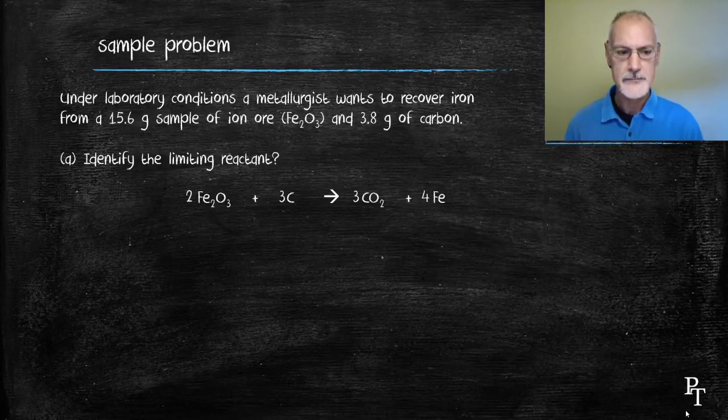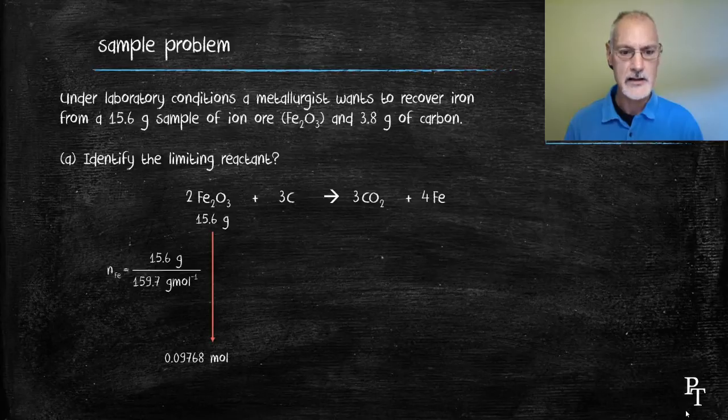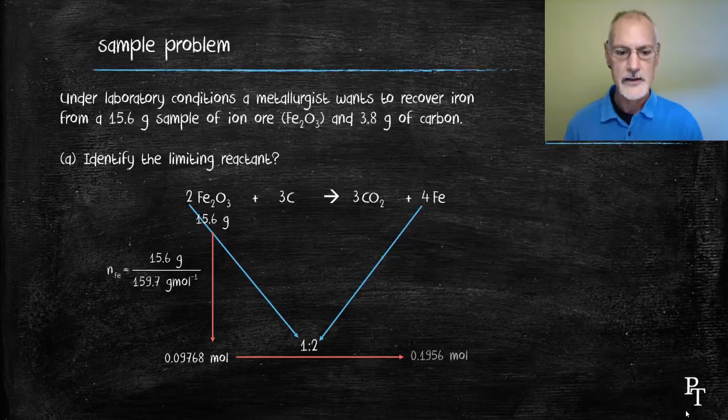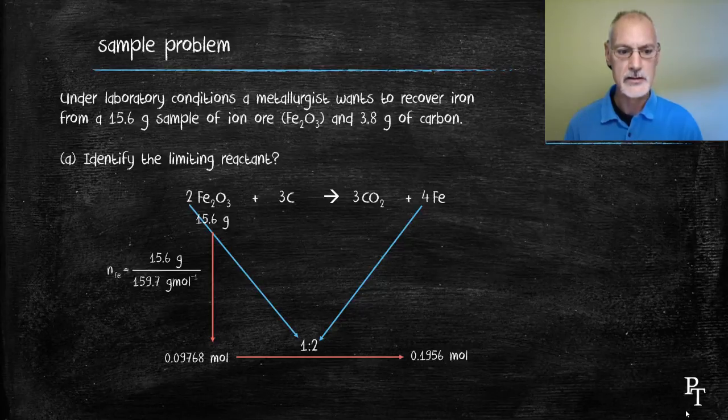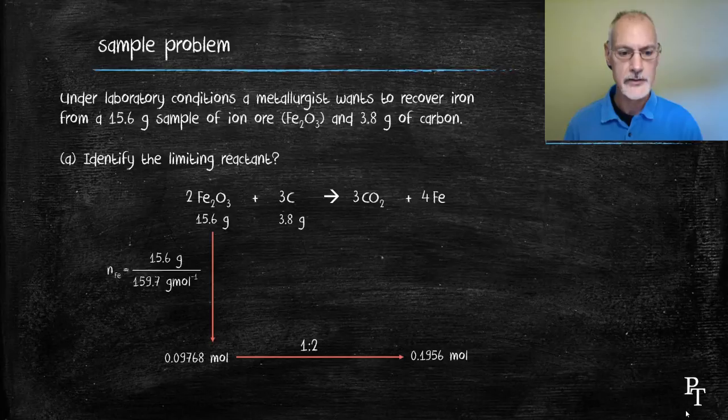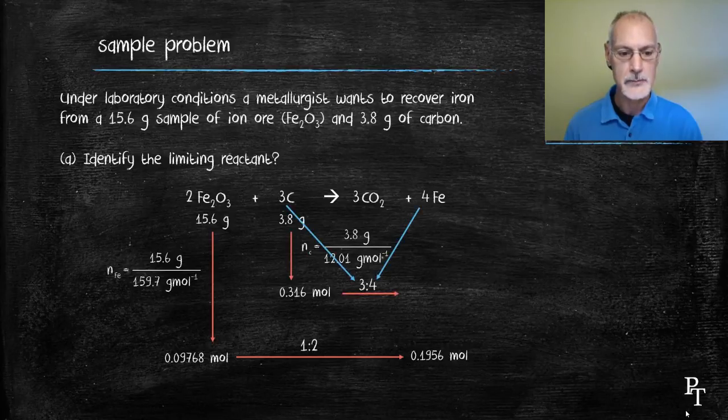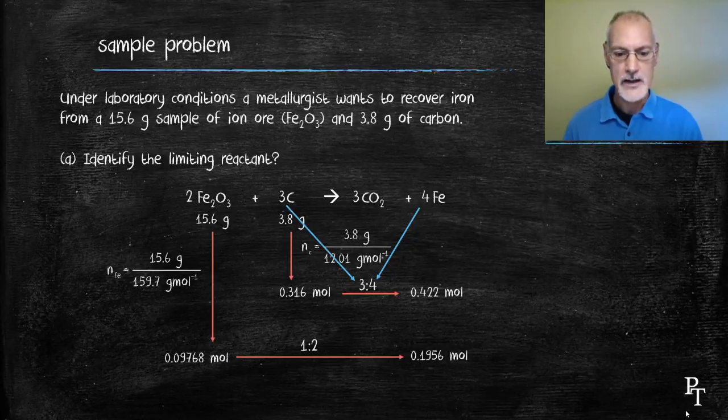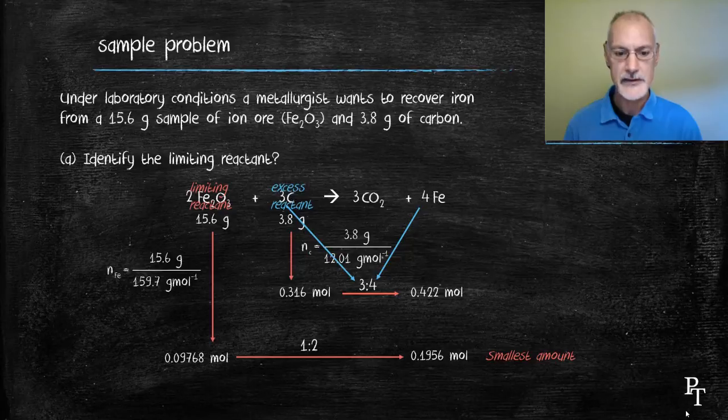I begin with my iron oxide. I'll convert that information to moles using the molar mass of iron oxide. The ratio that exists between iron oxide and iron, the substance I want to make, is 2 to 4, and I can simplify that ratio to 1 to 2. So I'm going to double the moles and arrive at this. So that's how many moles of iron I could make based on my iron oxide. I now repeat that calculation, but begin with the carbon. Convert the carbon to moles using the molar mass of carbon. The ratio that exists between carbon and iron is 3 to 4. So I'm going to multiply 0.316 by 4 and divide by 3. I only make the smaller of those two amounts. That then indicates that iron oxide is my limiting reagent and the carbon would be my excess reagent.